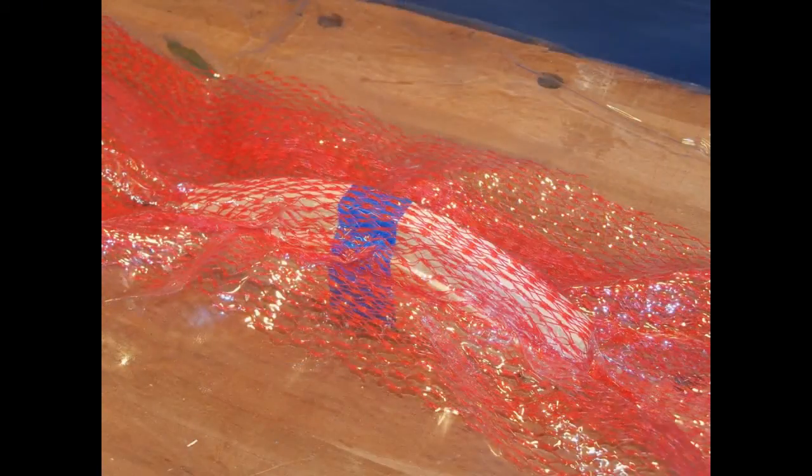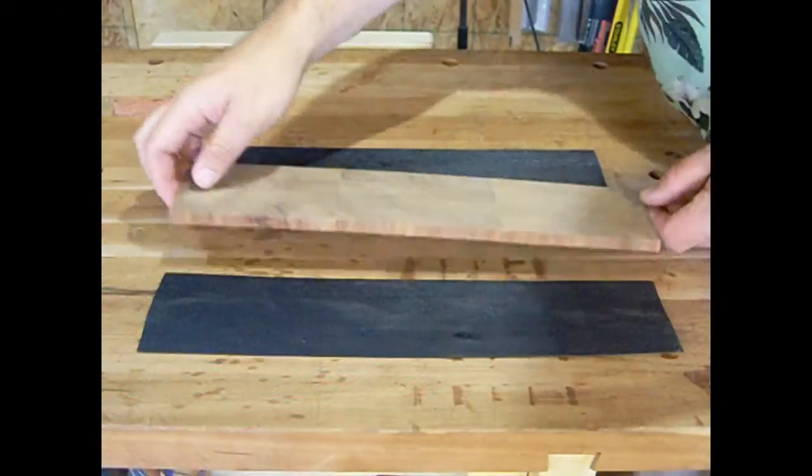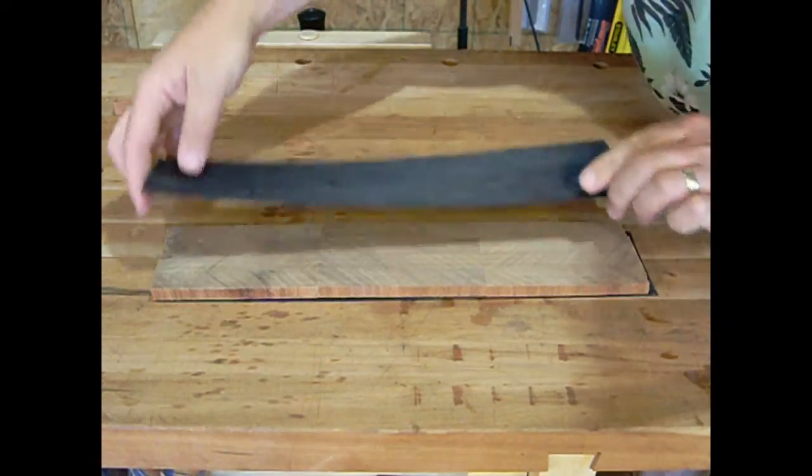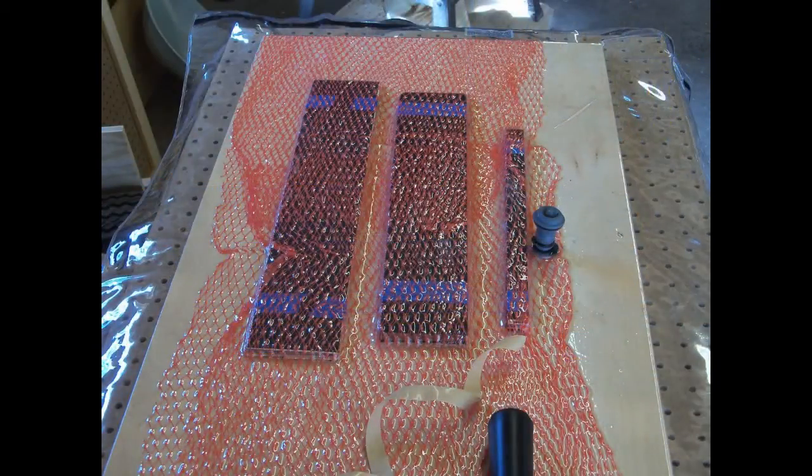A vacuum press system will allow you to create a wide range of formed parts. But it's also highly useful when you're laminating flat stock as well. Because the pressure is evenly spread across the entire part, you get excellent glue ups with no voids or gaps in between the layers.